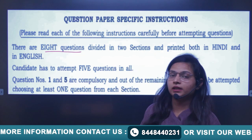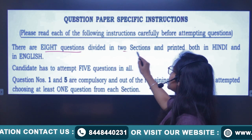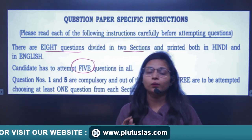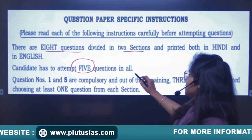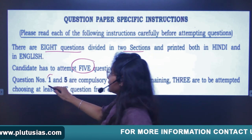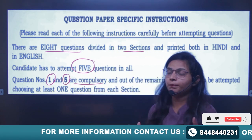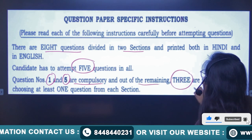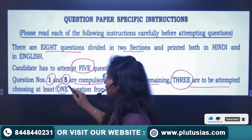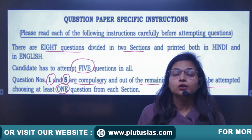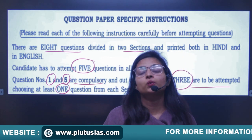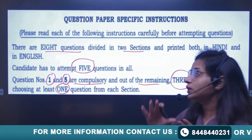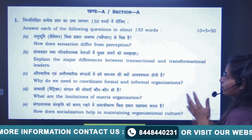There are 8 questions in the paper divided into 2 sections, and you have to attempt only 5 questions in total. The 1st and 5th questions are compulsory from both parts, and thereafter out of the remaining you need to attempt 3 questions, choosing at least 1 question from each part. If you already know these basics, let's move to the discussion.